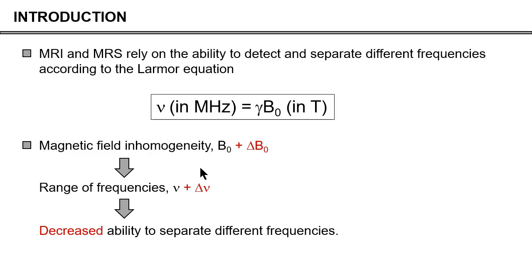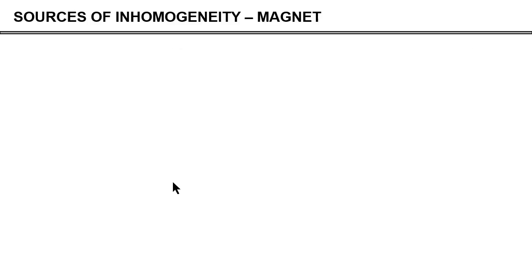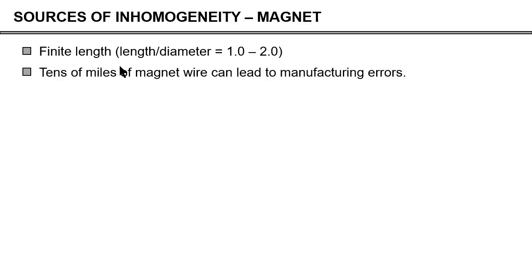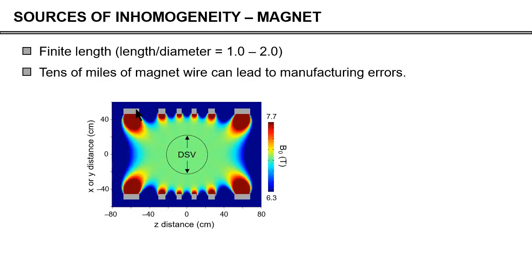So why do we have inhomogeneity? The previous speaker already showed a few examples. The magnet is certainly by far the most important one. If you have an infinitely long solenoid coil, you're going to have a perfectly homogeneous magnet. However, an infinite coil is not practical. So in reality, the length is finite, and that will introduce inhomogeneity. In addition, you're going to have many miles of magnet wire, and if they're not laid out perfectly, you're going to get manufacturing errors and inhomogeneity.